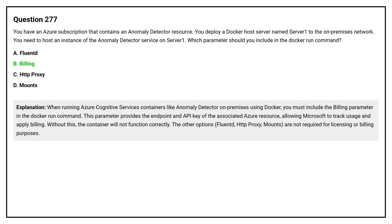When running Azure Cognitive Services containers like Anomaly Detector on-premises using Docker, you must include the billing parameter in the Docker run command. This parameter provides the endpoint and API key of the associated Azure resource, allowing Microsoft to track usage and apply billing. Without this, the container will not function correctly. The other options — Fluentd, HTTP proxy, and mounts — are not required for licensing or billing purposes.